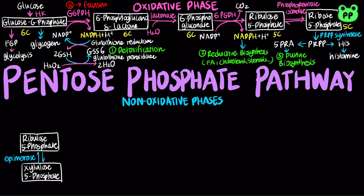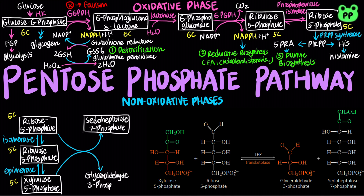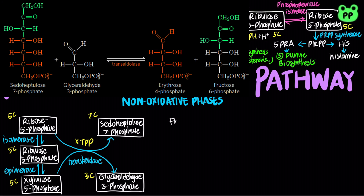Then, a series of steps catalyzes the rearrangements of carbon skeletons. First, transketolase transfers carbon-1 and carbon-2 of xylulose 5-phosphate to ribulose 5-phosphate, forming the 7-carbon product sedoheptulose 7-phosphate and glyceraldehyde 3-phosphate. Transketolase requires the cofactor thiamine pyrophosphate, or TPP, which stabilizes a 2-carbon carbanion in this reaction.